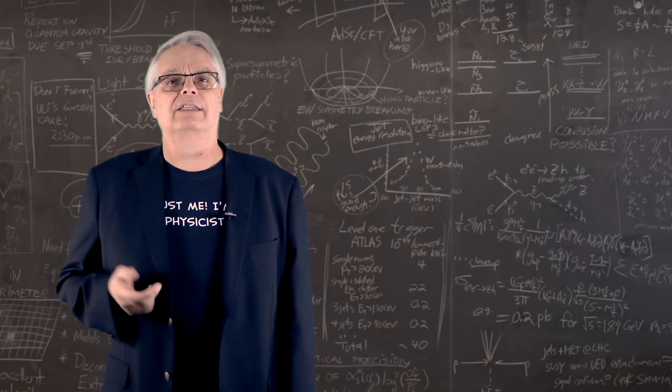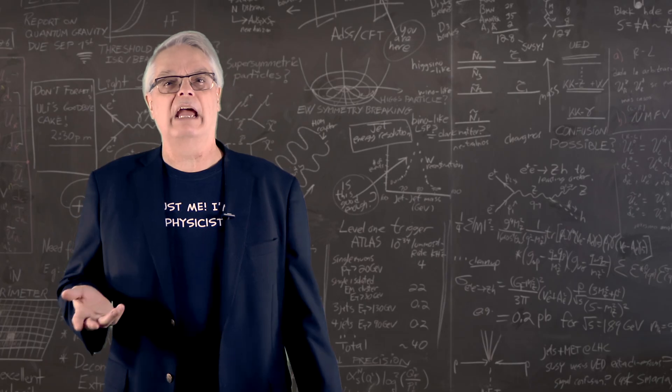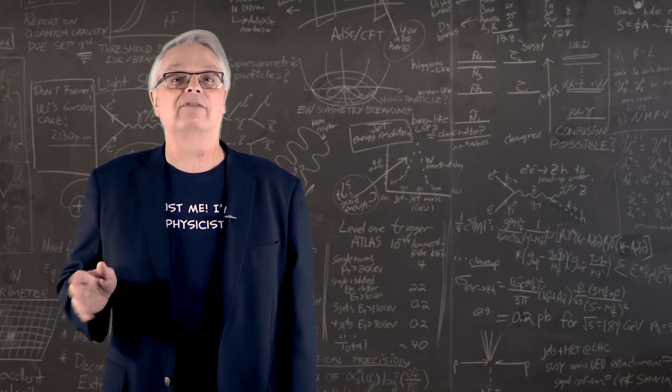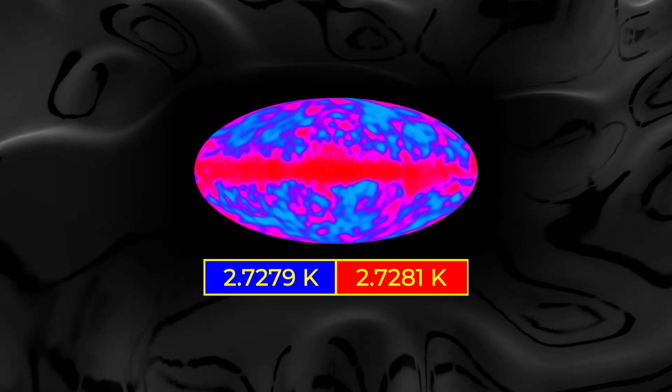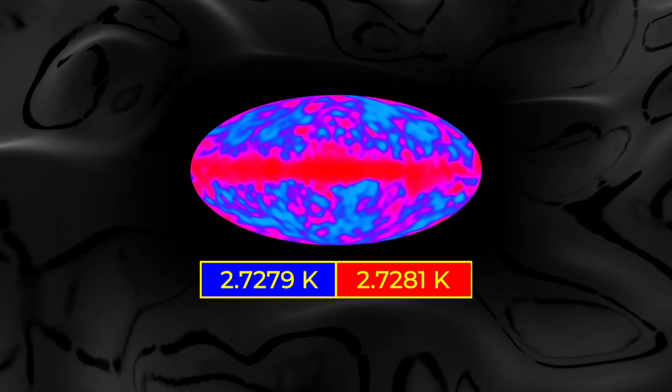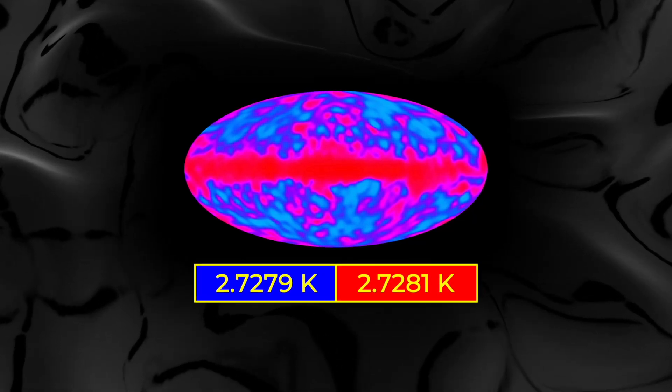Once we understand that the Milky Way is moving compared to the average of the rest of the universe, we can subtract off that effect and look for even smaller variations. Now the differences in temperature between red and blue that you see here are only 200 microkelvin.